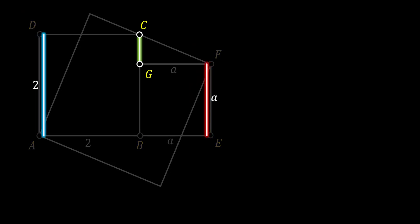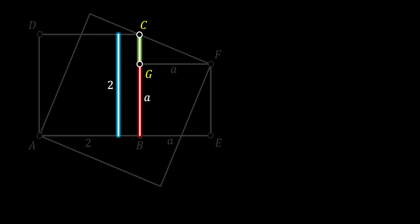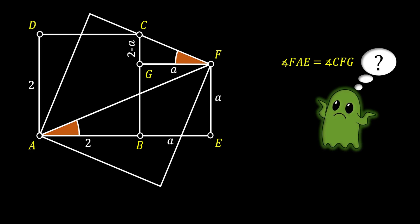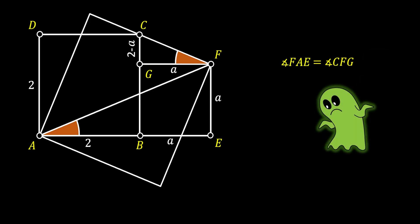Drawing a line from point A to point F and looking at the angle F, A, E, this angle turns out to be equal to the angle C, F, G. If you're wondering why, I'll leave that as a challenge — please write in the comments which mathematical rule or rules we're using to conclude that those two angles are equal.